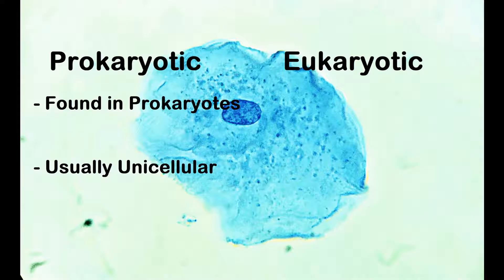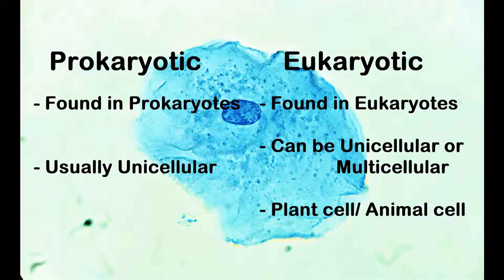Prokaryotic cells are found in lower organisms called prokaryotes such as bacteria. Prokaryotes are usually unicellular. Eukaryotic cells are found in higher forms of life collectively known as eukaryotes, which can be both unicellular or multicellular.